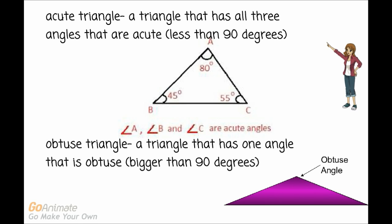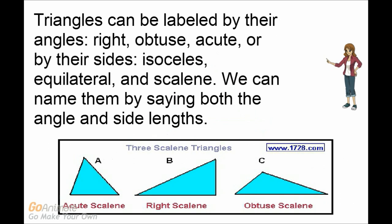An acute triangle is a triangle that has all three angles that are acute, or less than 90 degrees. An obtuse triangle is a triangle that has one angle that is obtuse, or bigger than 90 degrees. Triangles can be labeled by their angles: right, obtuse, acute.